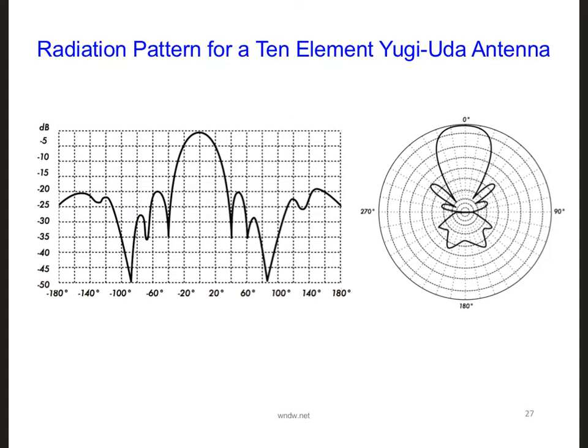For example, if we consider a Yagi-Uda antenna in receiving mode, the Yagi-Uda antenna only has very thin and short wires. But it will actually collect power over an area with different dimensions than its physical dimensions, and we need to use the antenna's directivity to determine the power that is received.